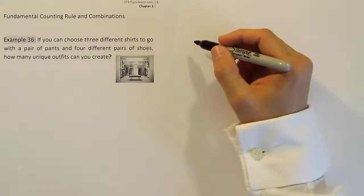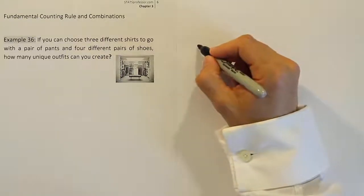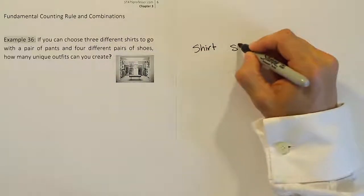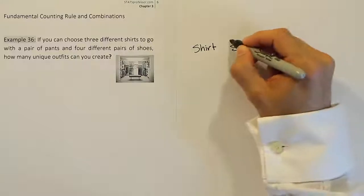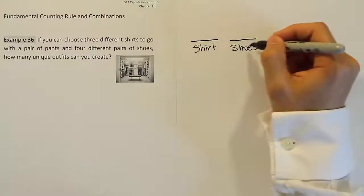So basically, the task of getting dressed here, according to this problem, is just simply a matter of picking the shirt and then picking the shoes. So it's a two-step process. In order to get dressed, this person will have to pick the shirt, and then pick the shoes.